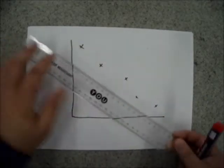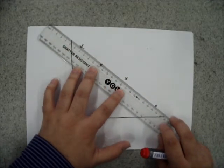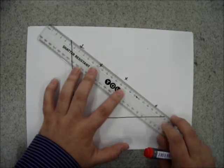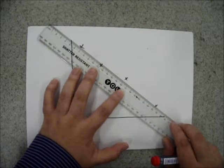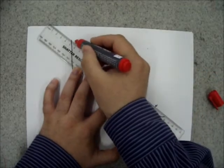But the rules for drawing a line of best fit are just the same. You draw a single, straight line that goes through as many points as you can, but as close to all of the points as possible. And again, it does not have to go through the origin.